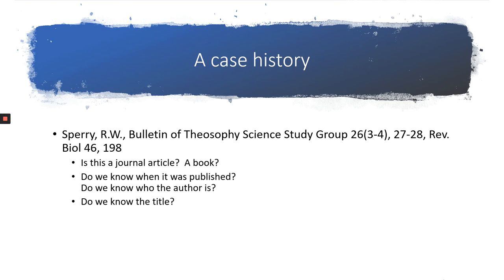Here's an example of one of the citations. Can you tell if that's a book chapter, a book, a journal article, or some other form of media? When I looked at this, first I wanted to determine the author, who was pretty obvious — Sperry. I also pretty easily determined that the citation was meant to be a journal article. The problem was it looked like there were two journals actually cited: the Bulletin of Theosophy Science Study Group and Review Biology.